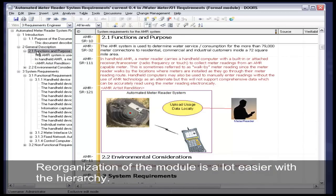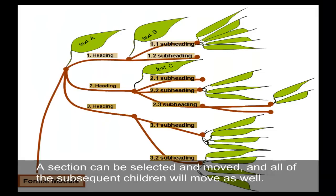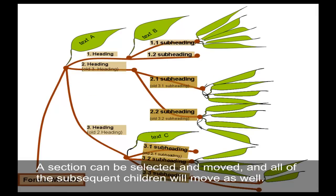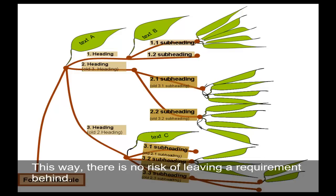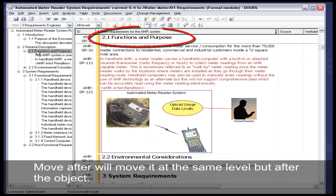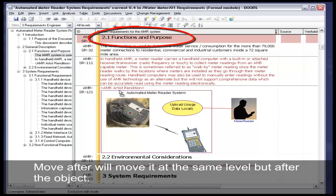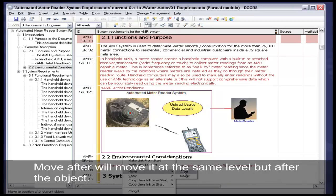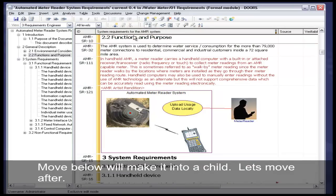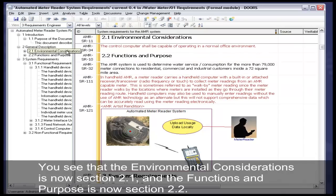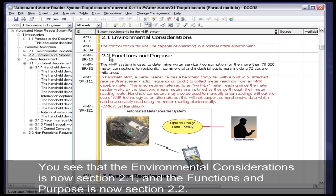Reorganization of the module is a lot easier with a hierarchy. A section can be selected and moved, and all of the subsequent children will move as well. This way, there is no risk of leaving a requirement behind. Move After will move it at the same level, but after the object. Move Below will make it into a child. Let's move After. You see that the Environmental Considerations is now section 2.1, and the Functions and Purpose is now section 2.2.